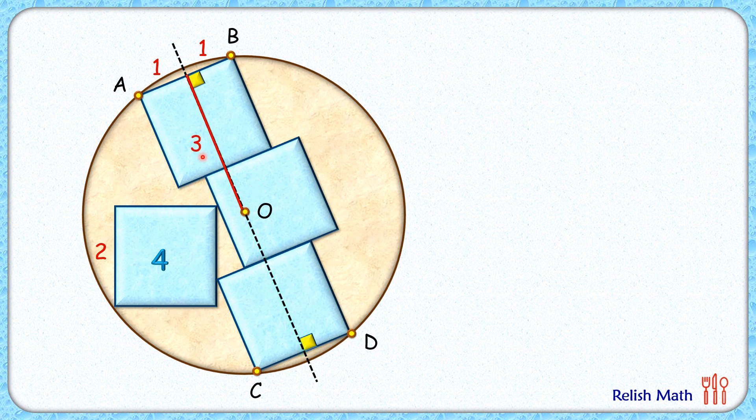BO is the radius of the brown circle. And in this right angle triangle, this pink right angle triangle, applying Pythagoras theorem we will get r square is three square plus one square, or r square is ten.